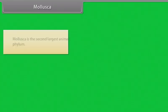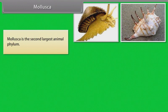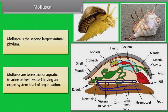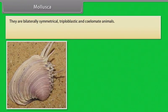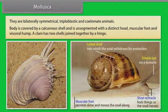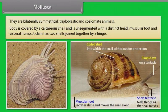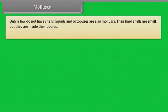Mollusca is the second largest animal phylum. Molluscs are terrestrial or aquatic, marine or freshwater, having an organ system level of organization. They are bilaterally symmetrical, triploblastic and coelomate animals. The body is covered by a calcareous shell and is unsegmented with a distinct head, muscular foot and visceral hump. A clam has two shells joined together by a hinge. Only a few do not have shells.